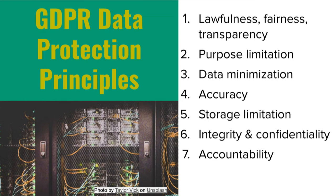Let's take a brief look at how the GDPR applies to data processors. These processors must follow seven protection and accountability principles when dealing with personal data. Processing must be lawful, fair, and transparent to the data subject. Processing must only be for the legitimate purposes specified explicitly to the data subject at the time of collection. It should collect and process only as much data as absolutely necessary for the purposes specified. Processors must keep personal data accurate and up-to-date. Processors may only store personally identifying data for as long as necessary for the specified purpose. Processing must be done in such a way as to ensure appropriate security, integrity, and confidentiality of the data. And finally, the data controller is responsible for being able to demonstrate GDPR compliance with all of these principles.